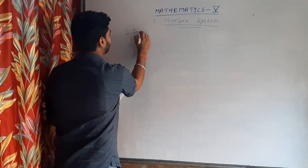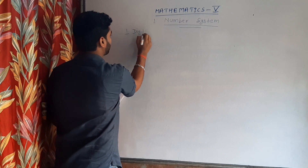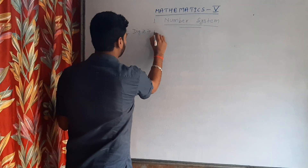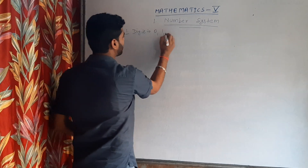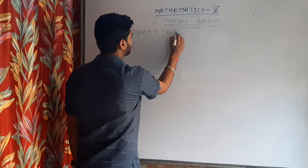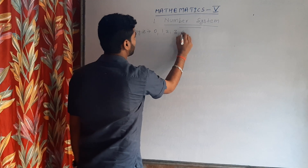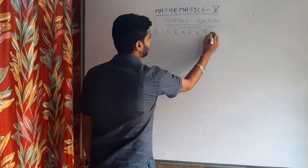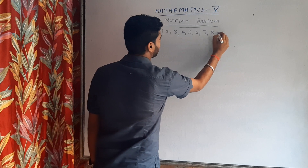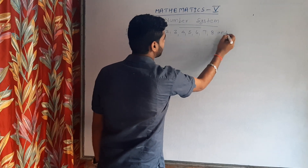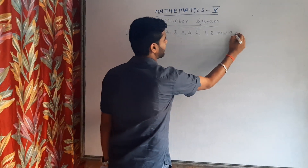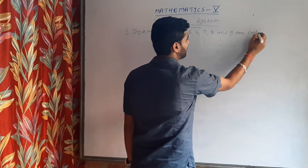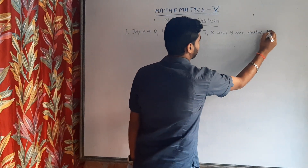First: digits. 0, 1, 2, 3, 4, 5, 6, 7, 8, and 9 are called digits.